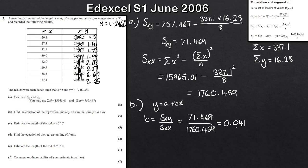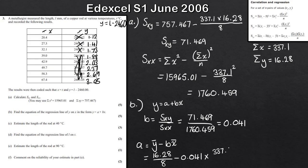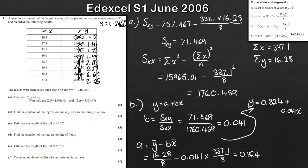Then a equals the mean of y minus b times the mean of x. The mean of y is the sum of y values divided by 8, minus 0.041 times the sum of x divided by 8. Plugging that into the calculator gives a equals 0.324. Writing the full regression line: y equals 0.324 plus 0.041x.